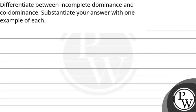Hello, let's read the question. The question says: differentiate between incomplete dominance and co-dominance, and substantiate your answer with one example of each. The key concept that will be used here is deviations to Mendelism.